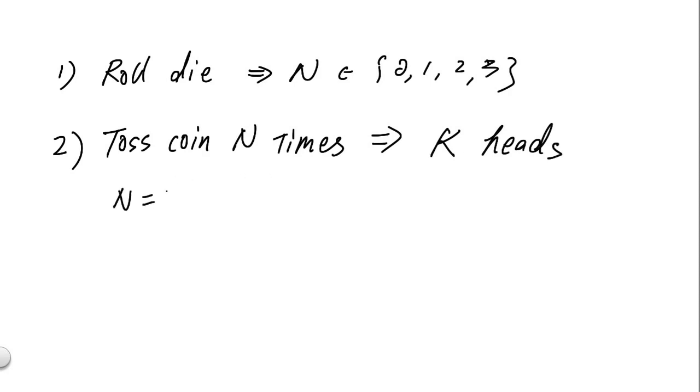For instance, if from the first die roll we get n equal to 3, then we'll toss a coin three times. Let's say the outcome is heads, heads, and tails, and that will give us k equal to 2.